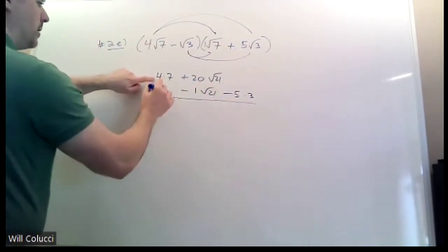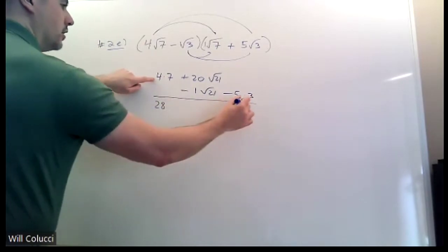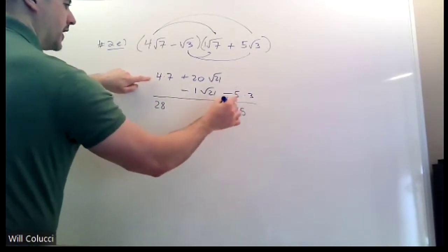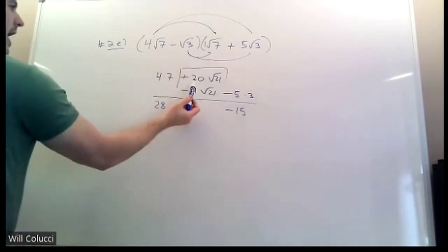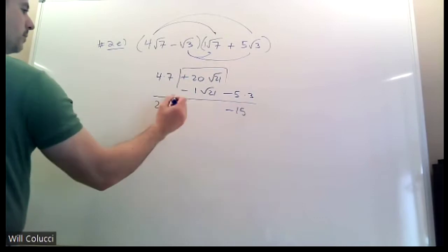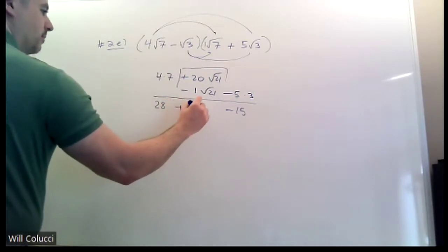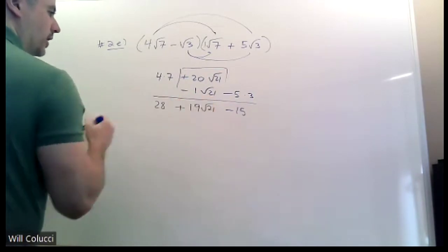Now, you can do 4 times 7 and make 28. You can do 5 times 3 and make 15. Don't forget the negative. And then you got to combine these together. You have 20 radical 21s and you lose one of them. That leaves you with 19 of them. 19 radical 21s.